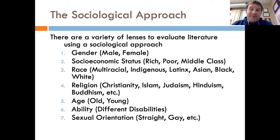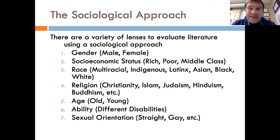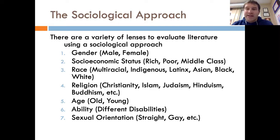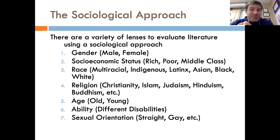Spoiler alert — you're going to have a homework assignment involving you taking a sociological lens. Gender is probably the low-hanging fruit here, but there are other ones you could latch onto. You also have socioeconomic status — what is this text saying about rich people? What is this text saying about poor people? What is this text saying about middle-class people? What is the reflection this text is trying to tell us about those groups? Even if poor people or rich people are not included in the text, what does that tell us about them?